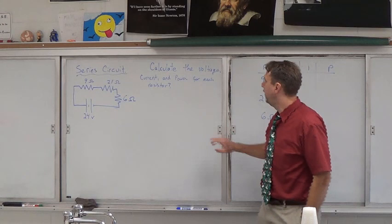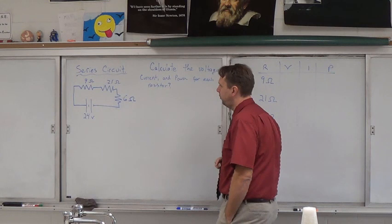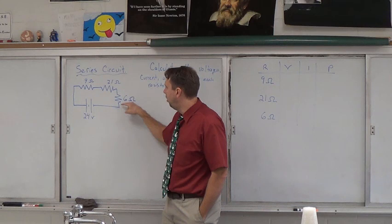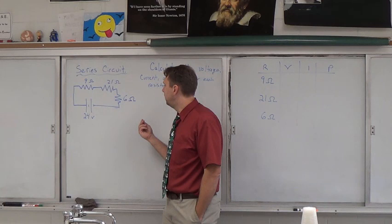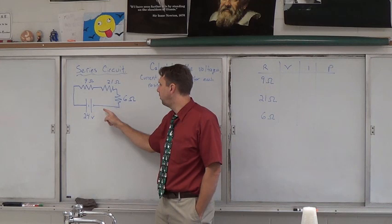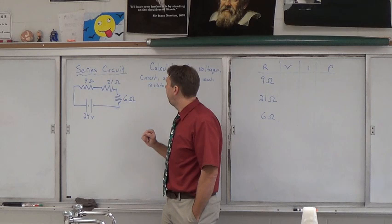So we're going to use that to help us analyze this. The question says, calculate the voltage, current, and power for each resistor. So you see that we have a series circuit here. Just because this 6 ohm is turned 90 degrees does not really affect the way it operates.